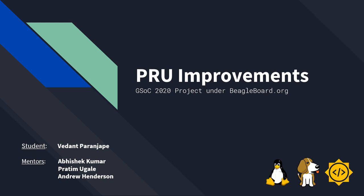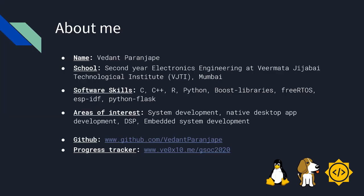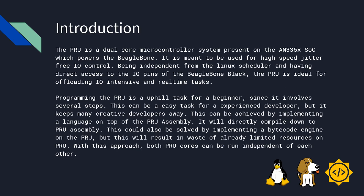My project aims to improve the infrastructure for the PRU. The PRU is a dual core microcontroller system present on the AM335X system on chip which powers the BeagleBoard. It is meant to be used for high speed jitter-free input-output control, being independent from the Linux scheduler and having direct access to the input-output pins of the BeagleBone Black. The PRU is ideal for offloading input-output intensive tasks and real-time tasks.